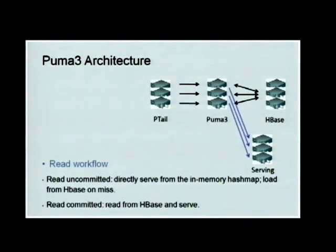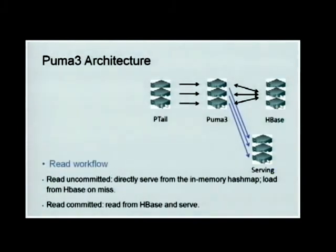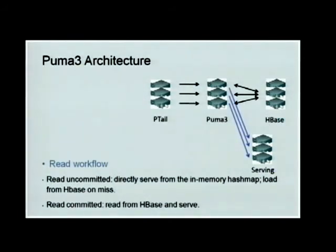For the read workflow, we mainly serve data from memory if the user decides to read uncommitted data — in that case it's really efficient and we get data with seconds of delay. However, there's one caveat: if the Puma3 process dies and restarts and loads the checkpoint, the summary numbers can potentially decrease. To avoid that, we plan to add a cache layer between Puma3 and the readers to make sure the number does not decrease.